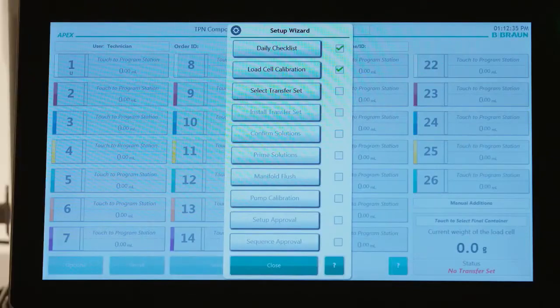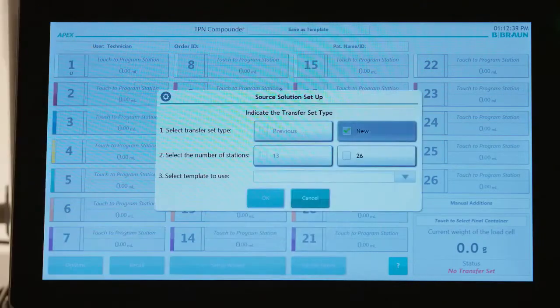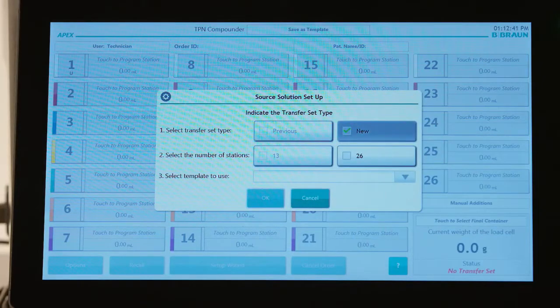To begin the process of selecting a transfer set, tap Select Transfer Set from the Setup Wizard. The Source Solution Setup screen will open.